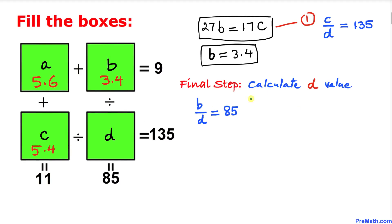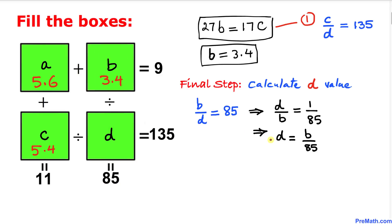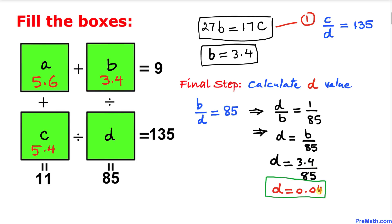For the final step, let's calculate d. We know b divided by d equals 85, which means d equal to b over 85. Substituting b equals 3.4 gives d equal to 3.4 divided by 85, and using a calculator our d value turns out to be 0.04.